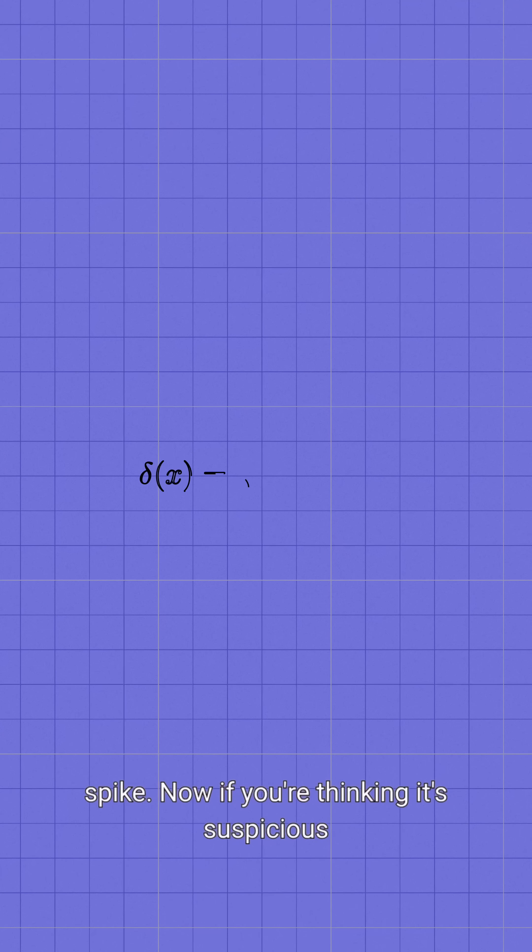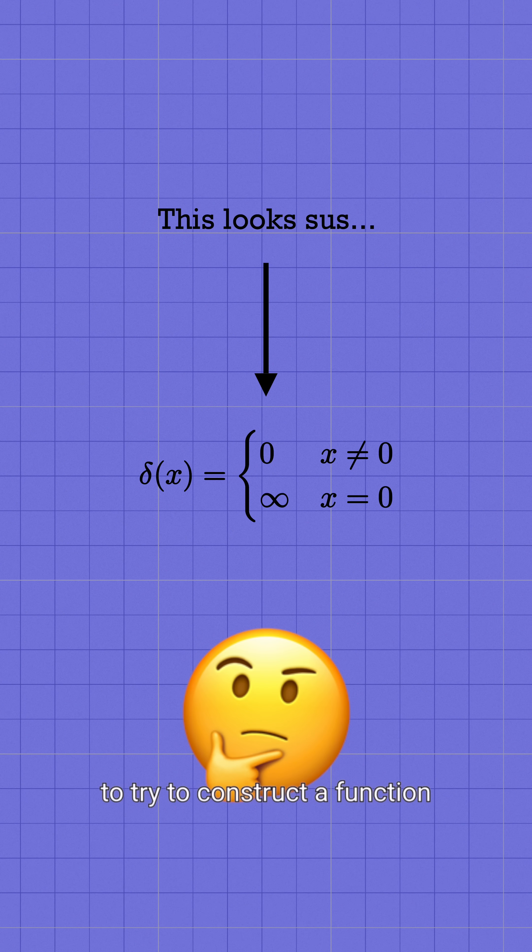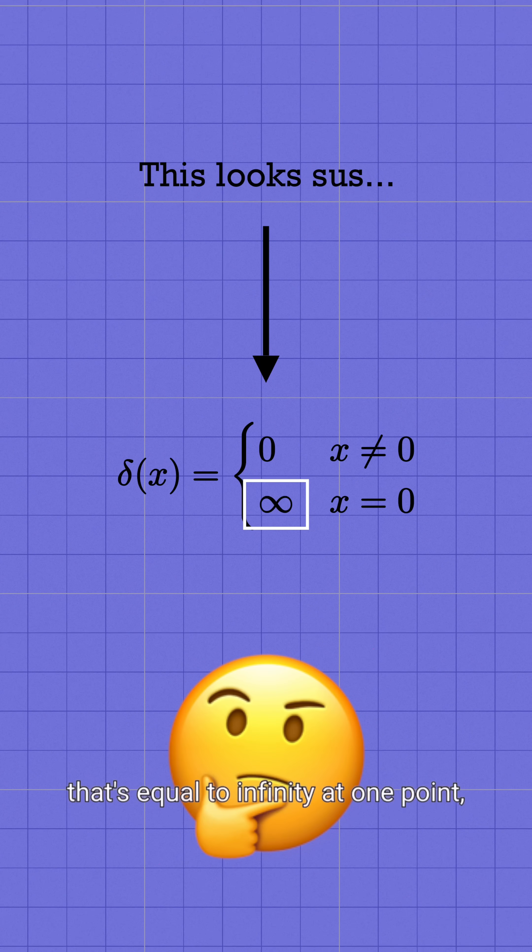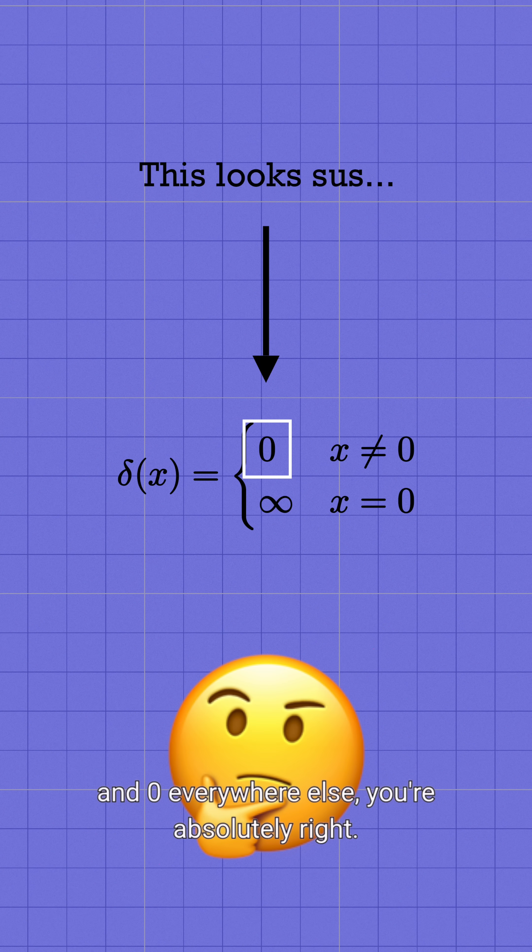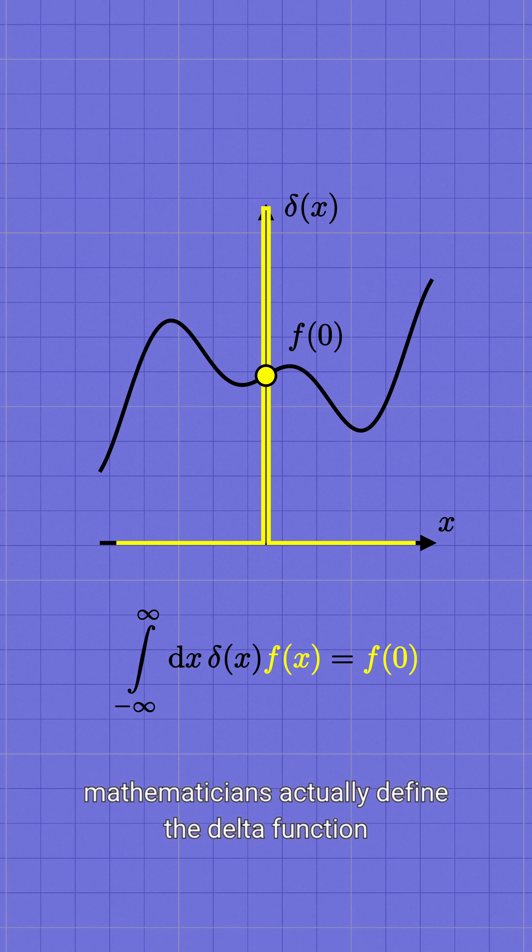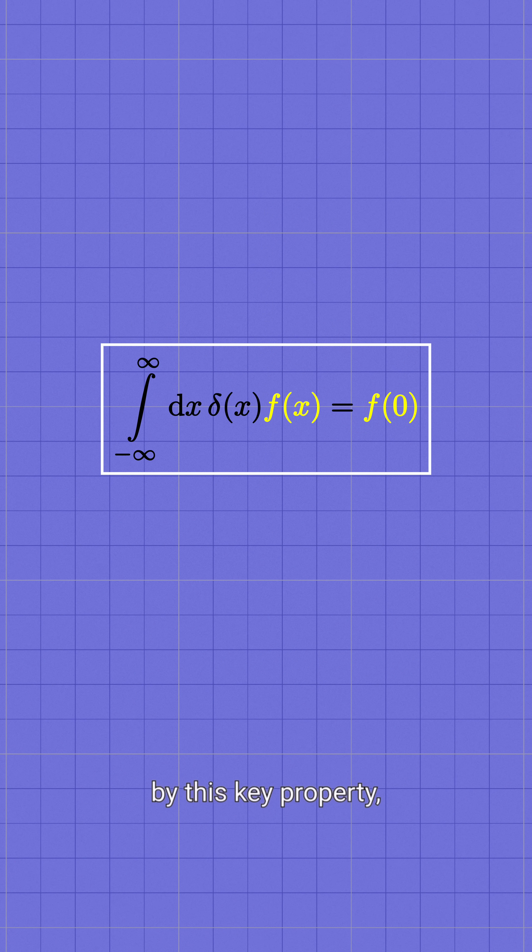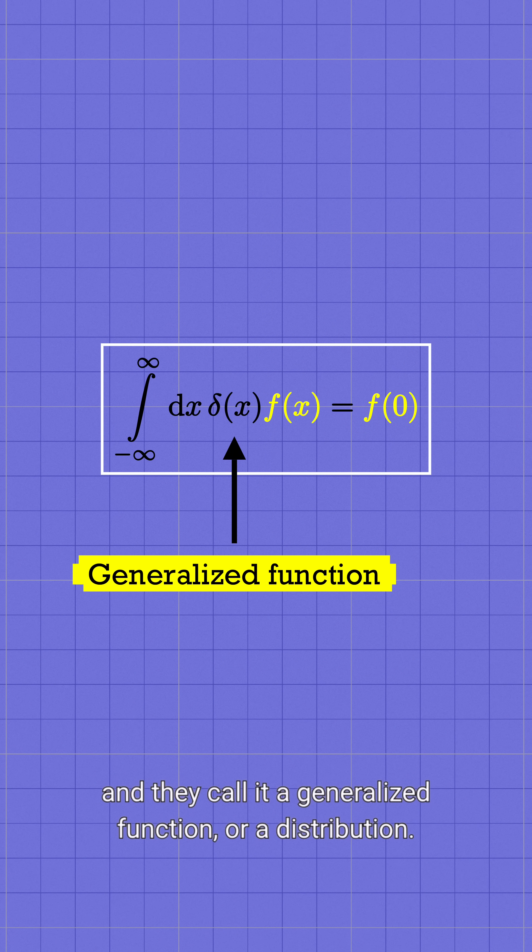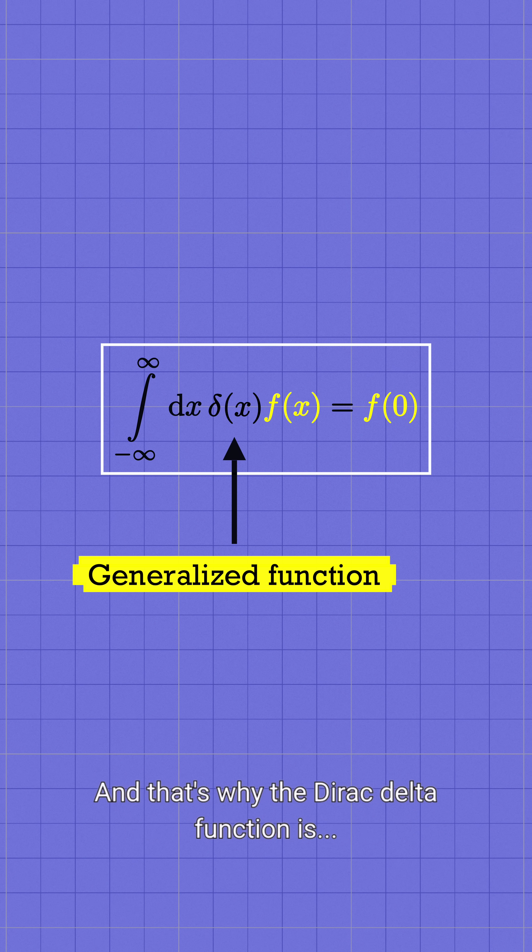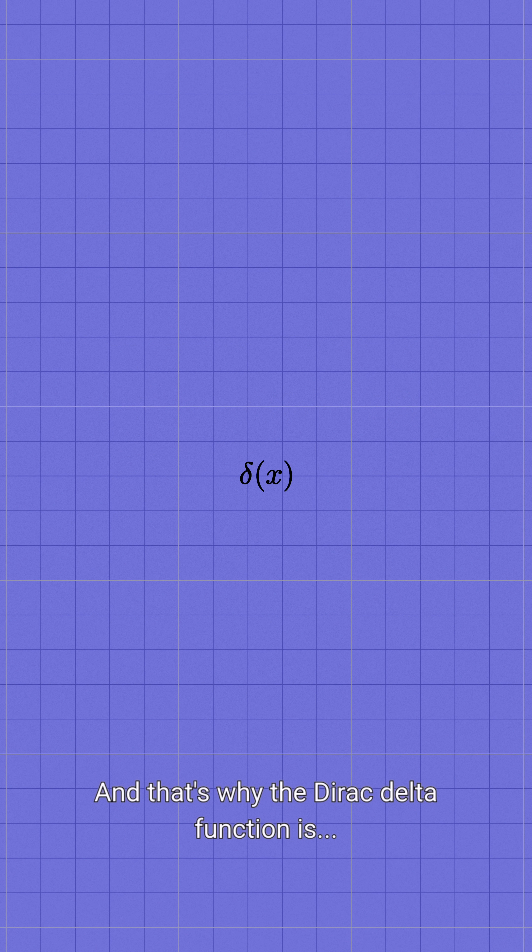Now, if you're thinking it's suspicious to try to construct a function that's equal to infinity at one point and 0 everywhere else, you're absolutely right. And so mathematicians actually define the delta function by this key property, and they call it a generalized function or a distribution. And that's why the Dirac delta function is.